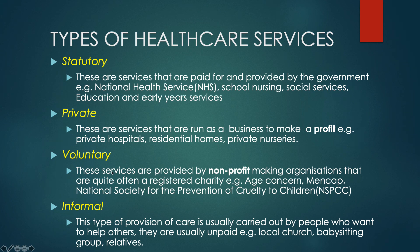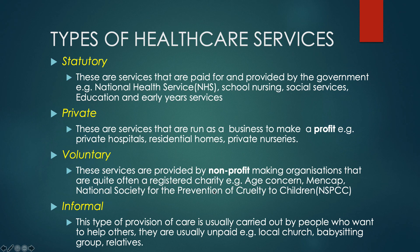So these are the four ways that health and social care is delivered in the UK: statutory services that you're entitled to as a citizen or resident of the United Kingdom; private organizations providing health and social care with the aim of making a profit; voluntary organizations, which are registered charities or registered nonprofit organizations; and then the informal delivery. I hope that's clear.